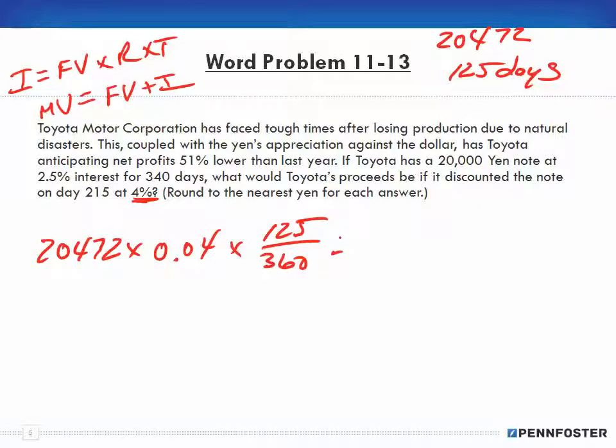We take 20,472 times 0.04 times 125, and we have 102,360 over 360, divided by 360, and the discount is 284.33, which we're going to round to 284.